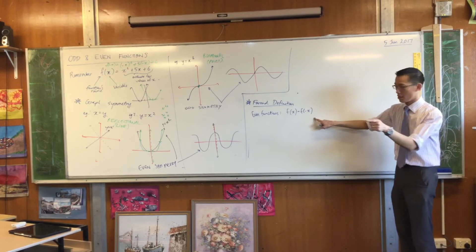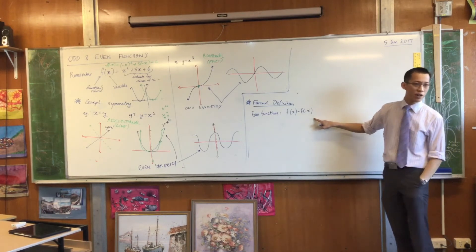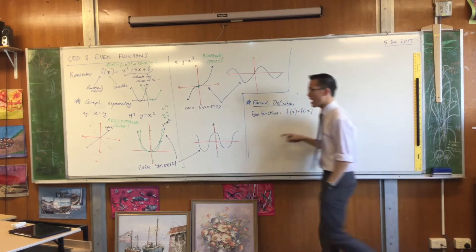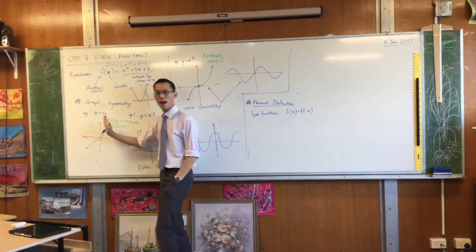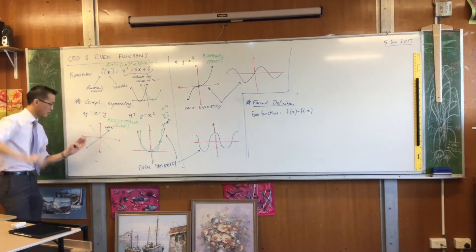Now we can answer the question. Y equals x. Do you see why it's not even symmetry? It has reflectional symmetry but not in the right way. It's off at an angle.